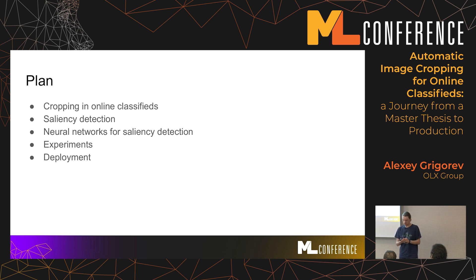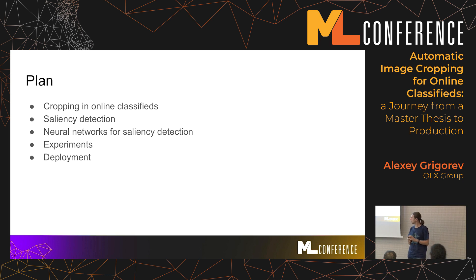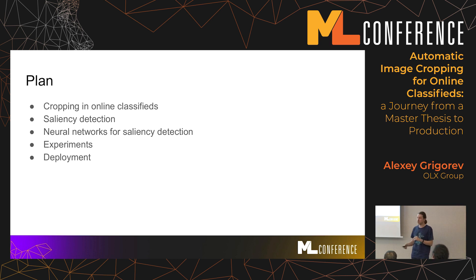The plan of this talk today: first I'll give a bit of motivation for why image cropping is important in online classifieds. Then I'll talk about a particular approach for image cropping — saliency detection — and how we can do saliency detection with neural networks. Then about experiments that the student did, and then about how we took the system and made it live.